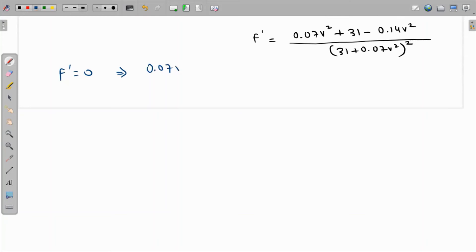0.07V² + 31 - 0.14V² = 0. That becomes 31 minus 0.07V² = 0 when we club the like terms.